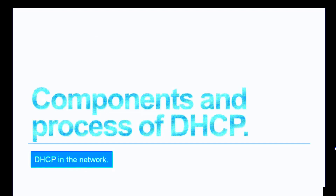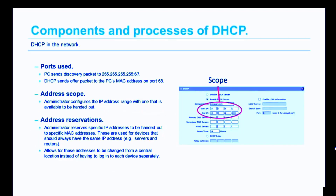Now let's talk about components and the process of DHCP, beginning with the ports used. The PC sends its discovery packet out on the broadcast address 255.255.255.255 on UDP port 67. When the DHCP server responds, it responds to the PC's MAC address — media access control address — on UDP port 68. The PC uses UDP port 67; the DHCP server responds on UDP port 68. That's important to remember.